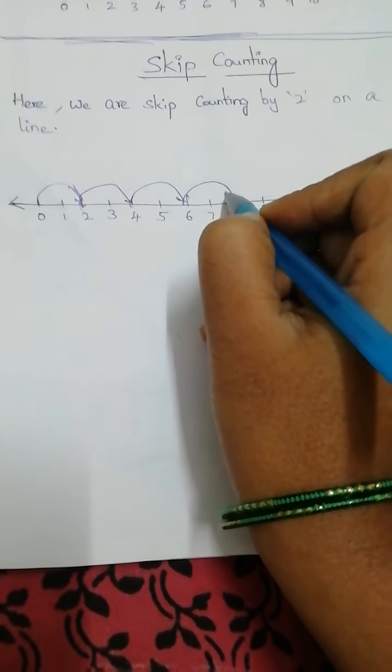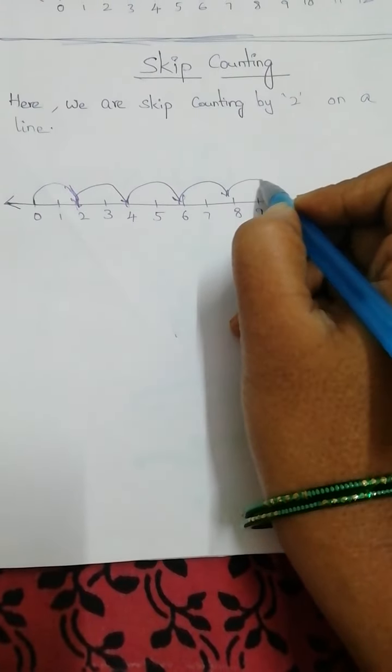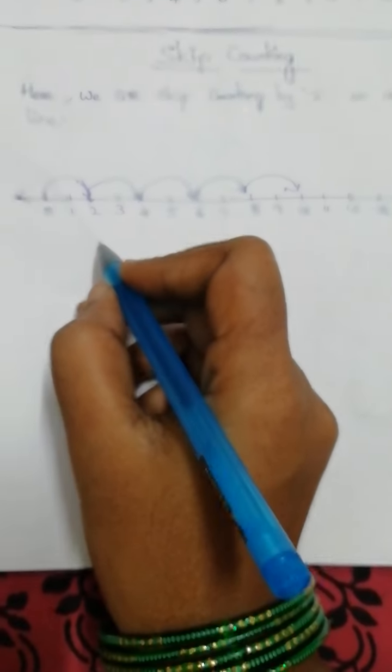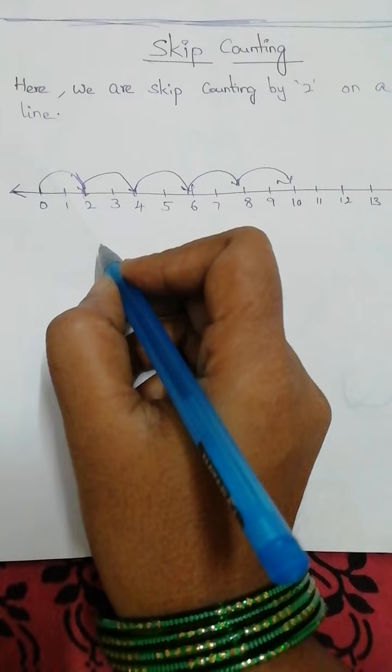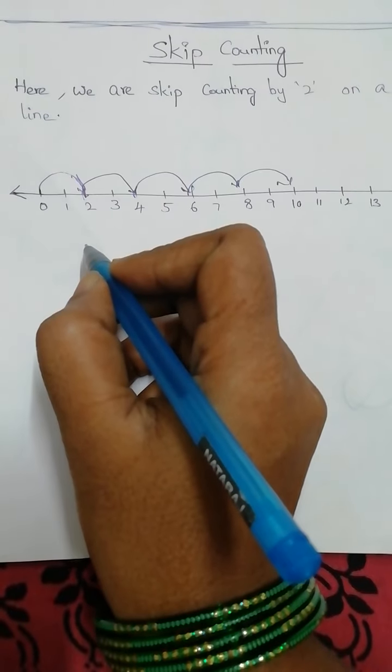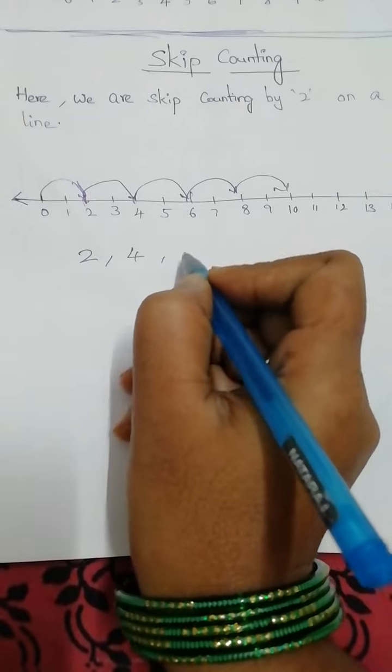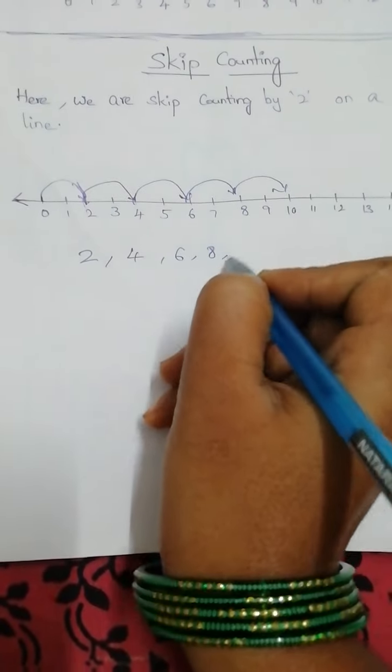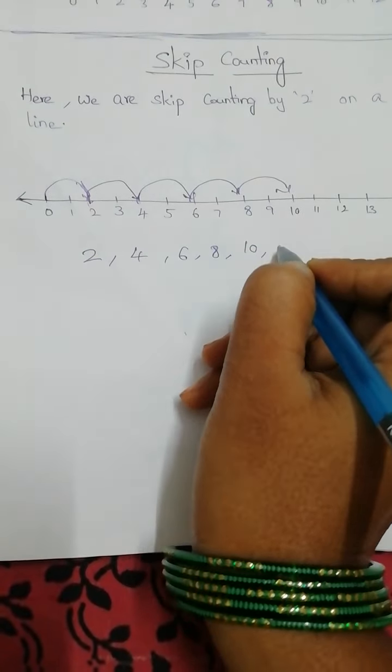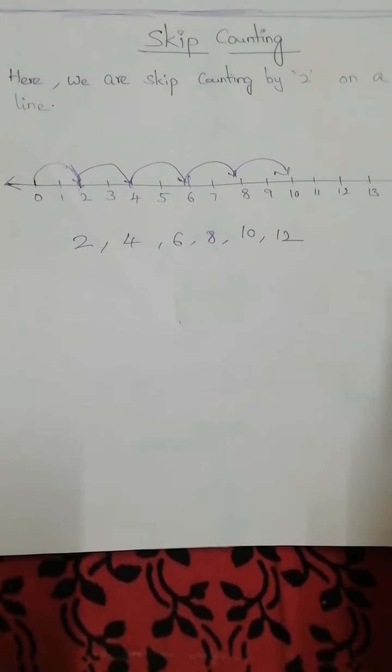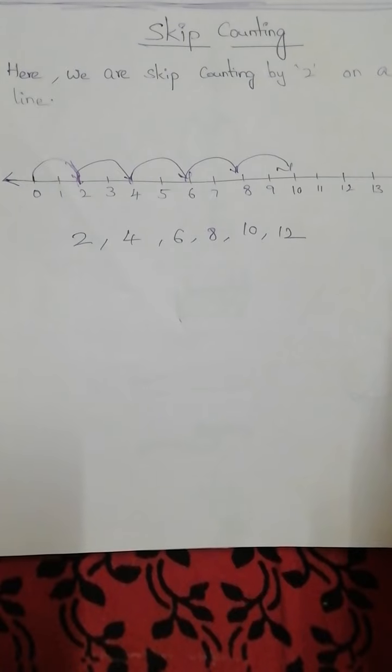And six plus two is eight, eight plus two is ten. So skip counting by two will give us all the even numbers, for example: two, four, six, eight, ten, twelve. By now you can easily understand that skip counting is the basis for multiplication.